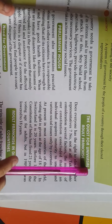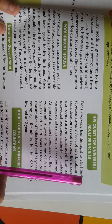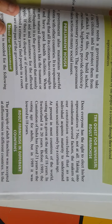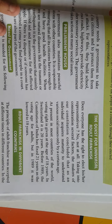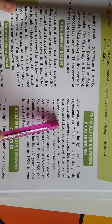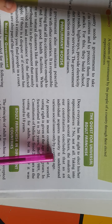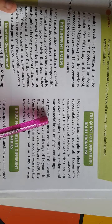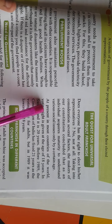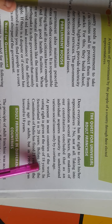The quest for universal adult franchise. Does everyone have the right to elect his or her representatives? No, not at all. Taking into consideration several factors, the makers of our constitution concluded that an individual acquires maturity to understand various social issues only by a certain age. At present, in most countries of the world, voting right is given at the age of 18 years.